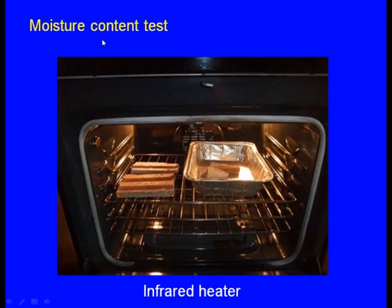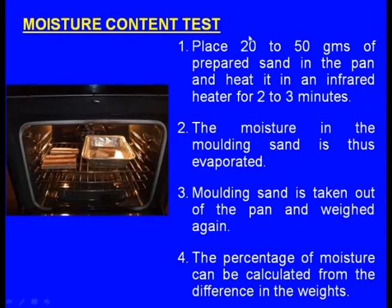How to measure the moisture content in the molding sand? The moisture content can be measured using an infrared heater. We can see here — this is an infrared heater and here we can place the sand specimen. When you keep this container with the green sand inside the infrared heater, after a few minutes the moisture will be dried out. The procedure: place 20 to 50 grams of prepared green sand in the pan and heat it in an infrared oven for about 2 to 3 minutes, then the moisture in the molding sand is evaporated.